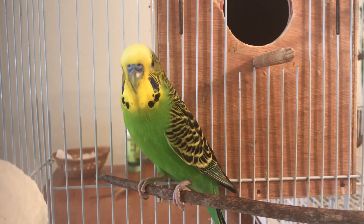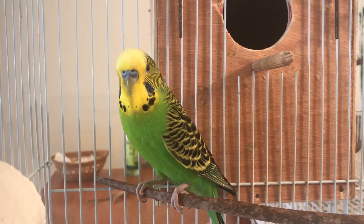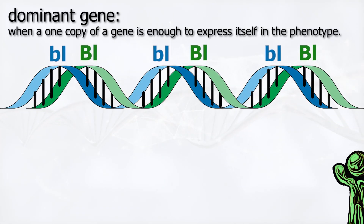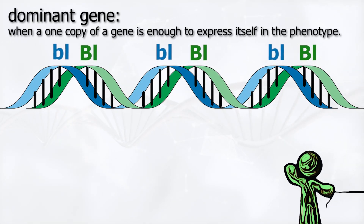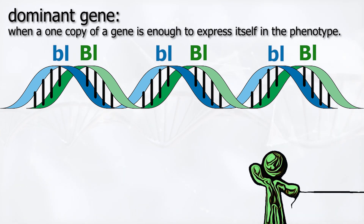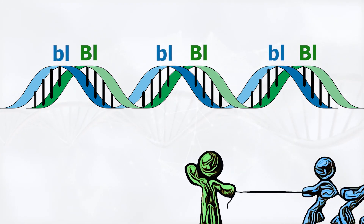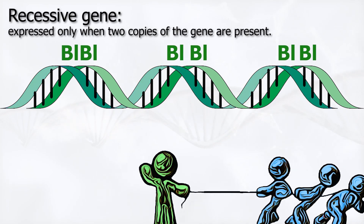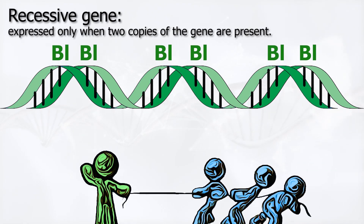The dominant gene is when one copy of a gene is enough to express itself in the phenotype. And it is opposed to a recessive trait, which is expressed only when two copies of the gene are present.